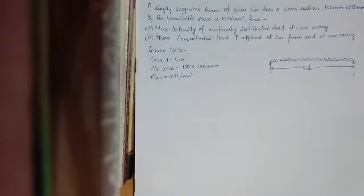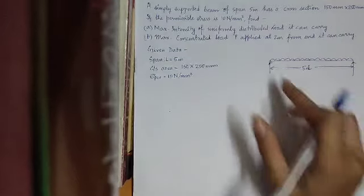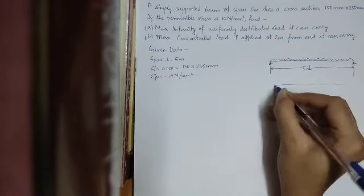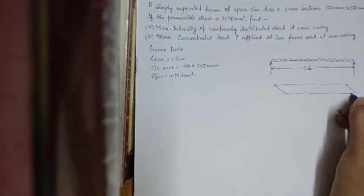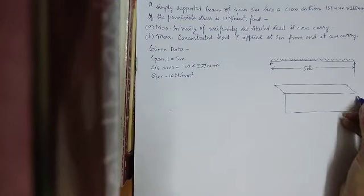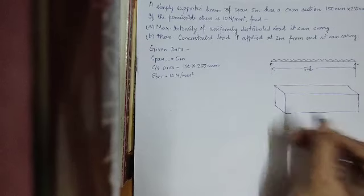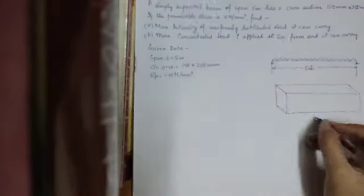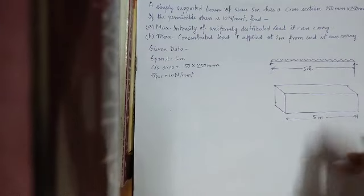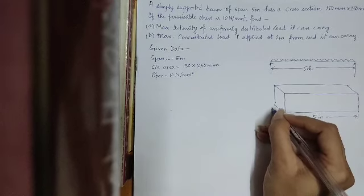The cross-sectional area of the beam is given. This is just a line diagram. If I see the 3D diagram, it is going to look somewhat like this. Basically it resembles the shape of a cuboid. This is 5 meters, this is 150 mm, this width of the beam.